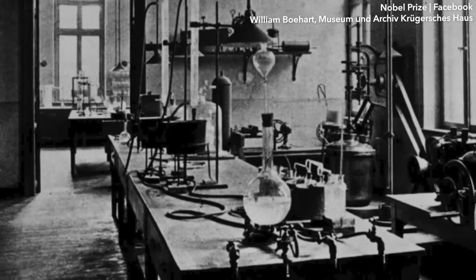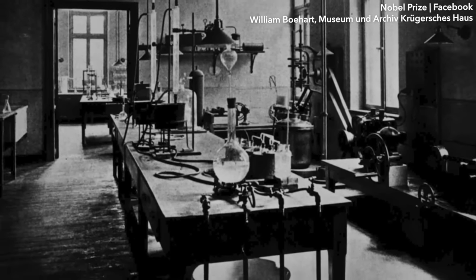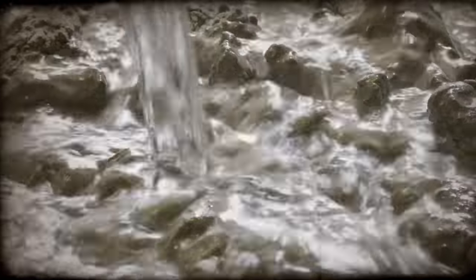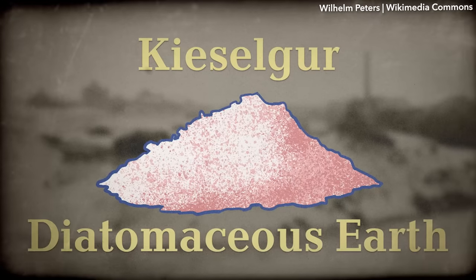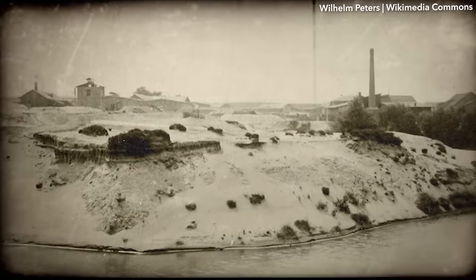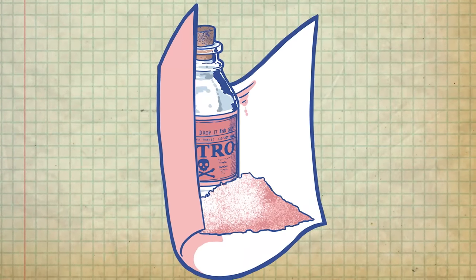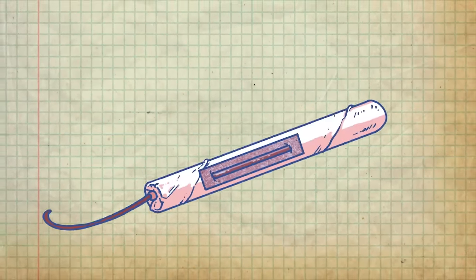While in Germany, investigating an accident at one of his factories, he realized that if the liquid was absorbed into something, it could become easier to handle. He found a naturally occurring substance called Kieselger, which is a kind of diatomaceous earth in the German moorlands, which he could combine with NTG to make an explosive paste that we call dynamite.